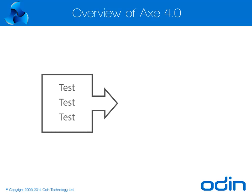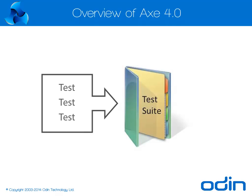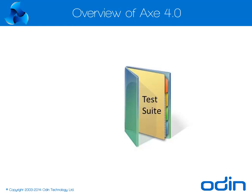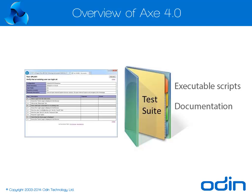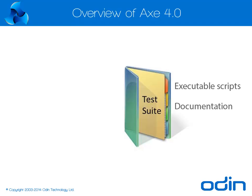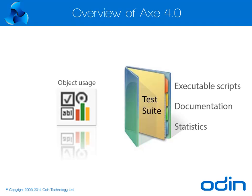Once testers have designed their test scenarios, they can organise them into test suites. When AXe builds a test suite, it will automatically generate the appropriate scripts for test execution in the language of the automation tool being used, along with natural language documentation. In addition, AXe will prepare useful statistics reports including object usage and add these to the test suite.